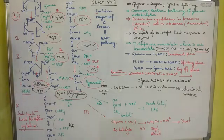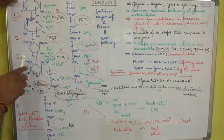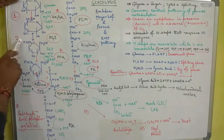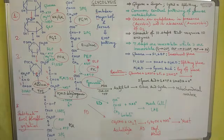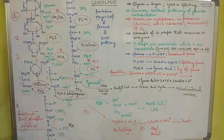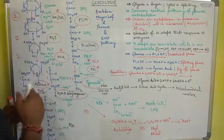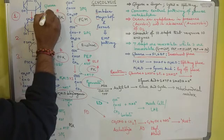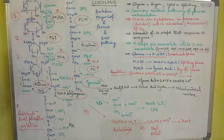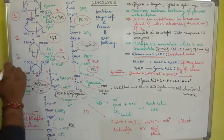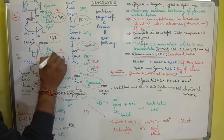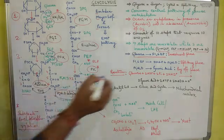During the 10 steps of glycolysis, the conversion of glucose to fructose 1,6-bisphosphate — steps 1, 2, and 3 — is called the investment phase. It is called the investment phase because energy in the form of ATP is invested: one ATP is utilized when glucose is converted to glucose 6-phosphate, and another ATP is utilized when fructose 6-phosphate is converted to fructose 1,6-bisphosphate.